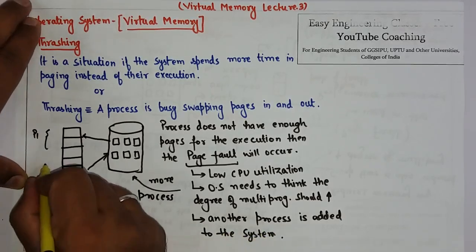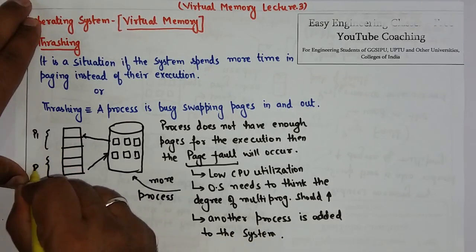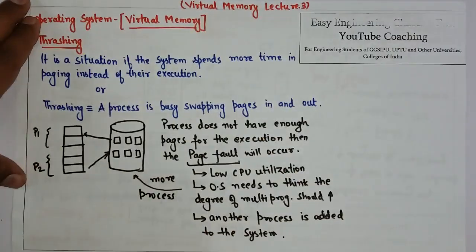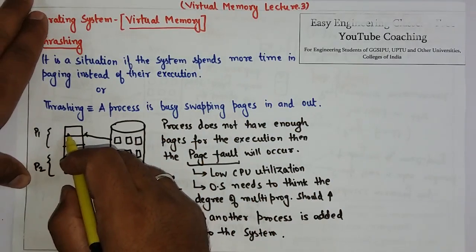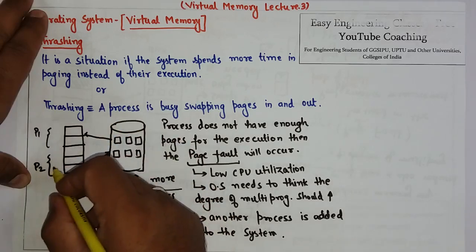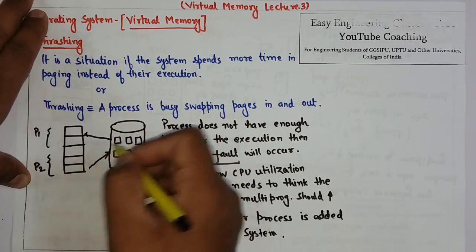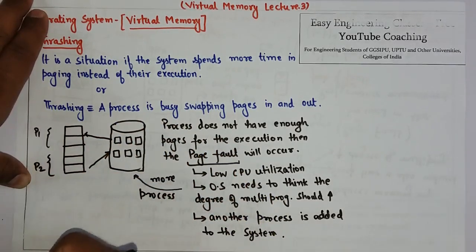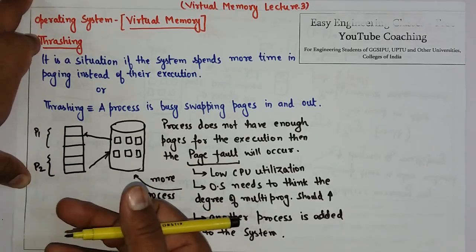Now there is one more process P2, which is added in the system. It will not have enough pages. In the execution, it will also swap in and swap out. And P2 has not enough pages in the system, so it will also swap in and swap out.